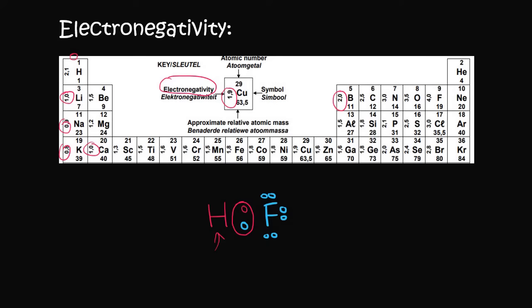So hydrogen has an electronegativity number of 2.1, whereas fluorine has an electronegativity number of 4. What that means is that fluorine attracts the electrons more than hydrogen. So the higher the electronegativity number, the more that atom attracts the electrons.